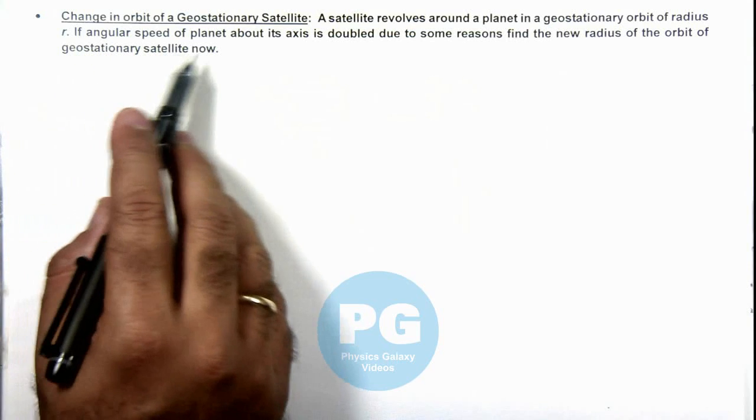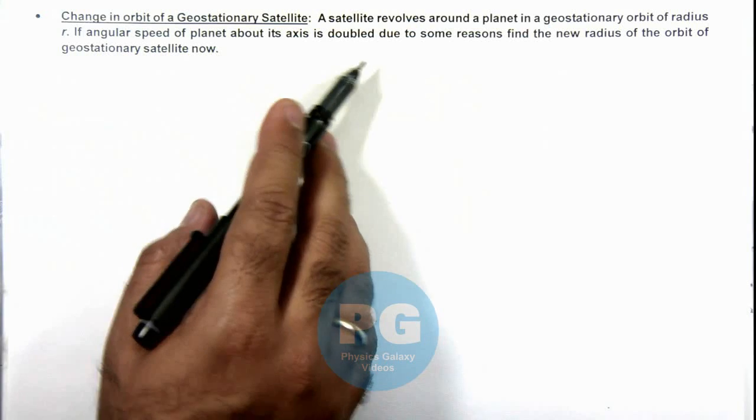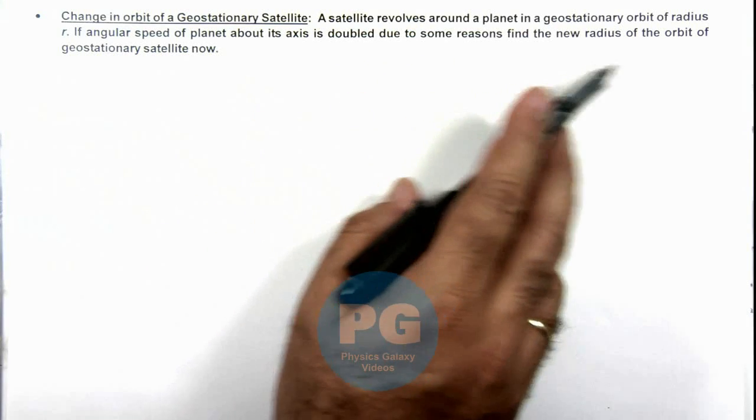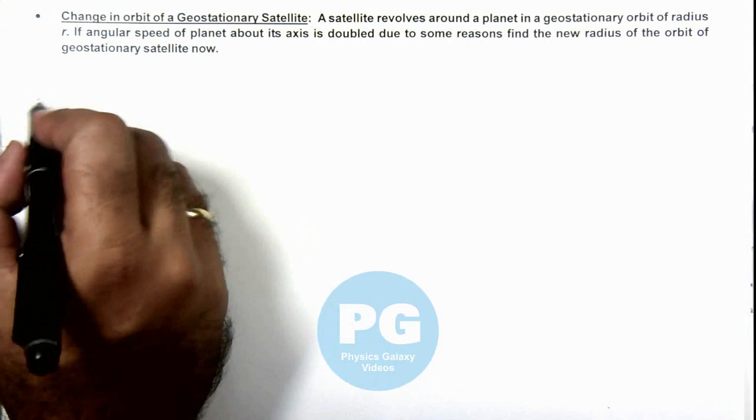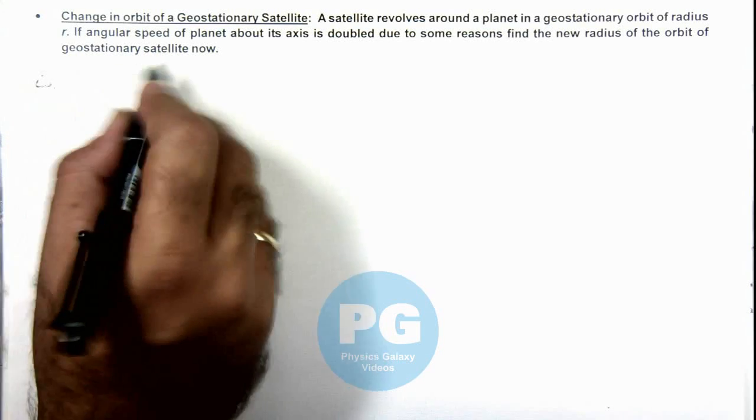If angular speed of the planet about its axis is doubled due to some reasons, we are required to find the new radius of the orbit for a geostationary satellite after the increase in the rotation speed of the planet.